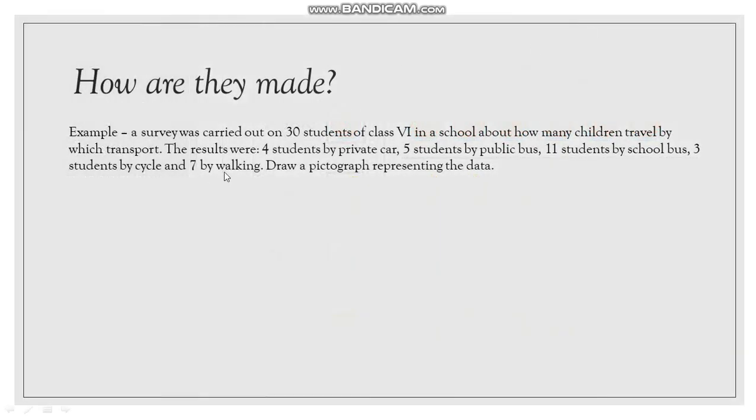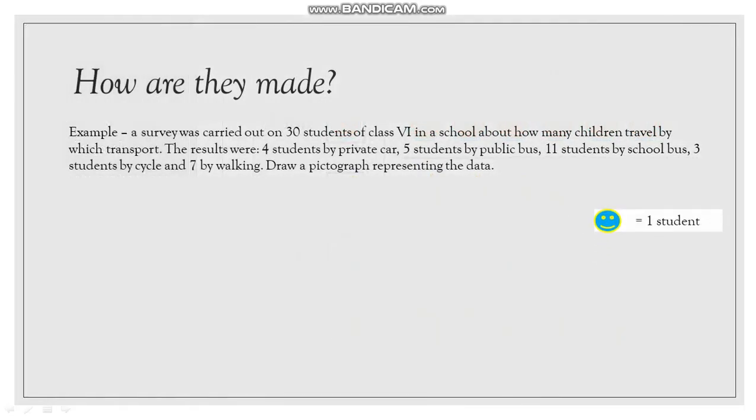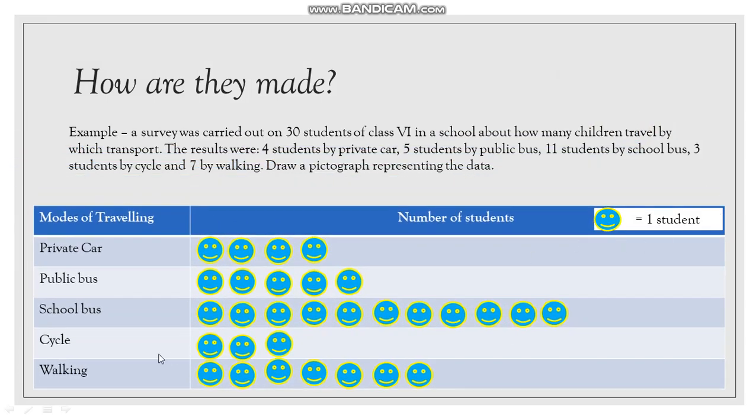Now how are they made? I'll just explain. We write the scale first, or we fix the scale. Here, 1 smiley equals to 1 student. So this was a survey of 30 students in class 6. By which transport did they travel? So 4 students by private car, etc. These were the results.